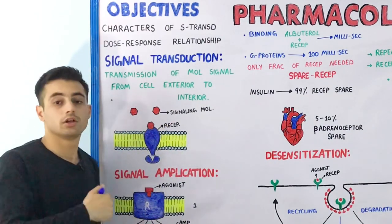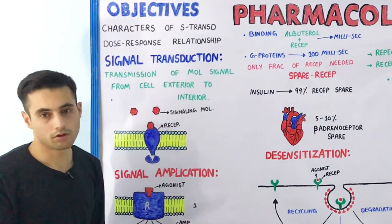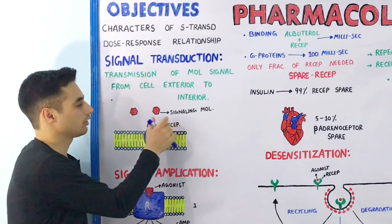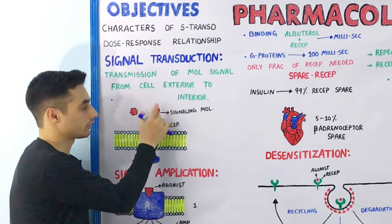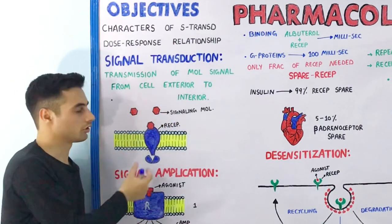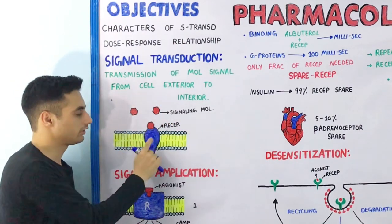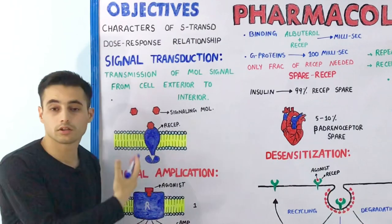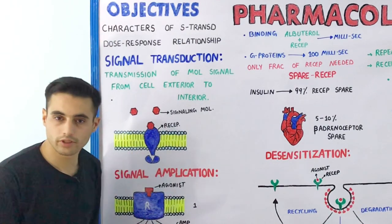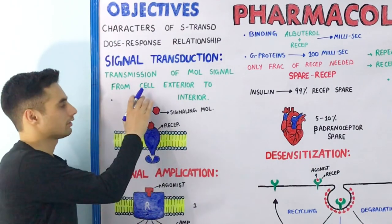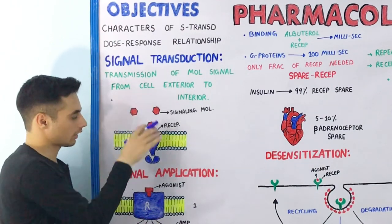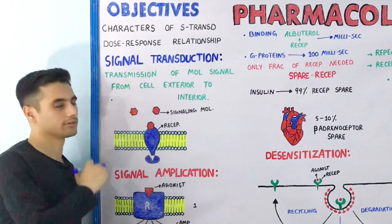The signaling molecule can be a hormone or a drug. When the signaling molecule — the red color signaling molecule — binds with the blue color receptor, conformational changes occur and the signal is transmitted from the outside to the inside.